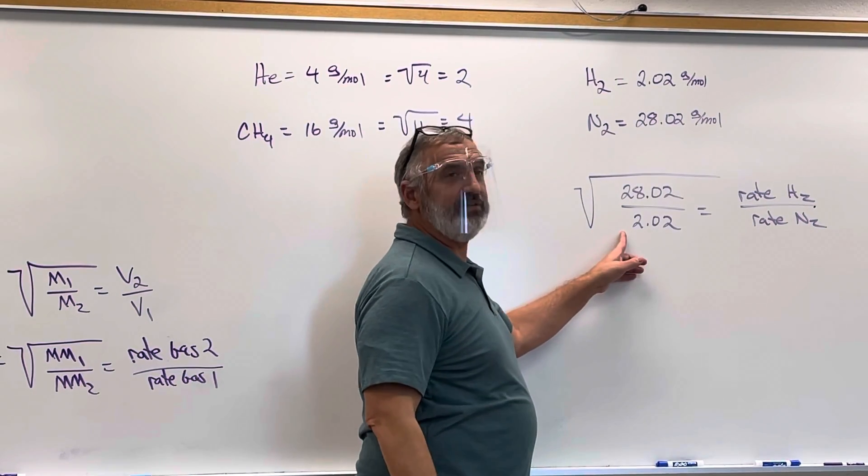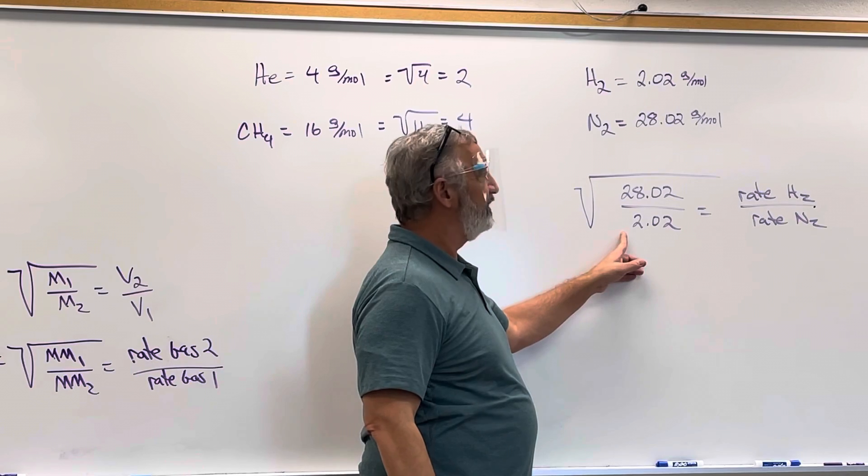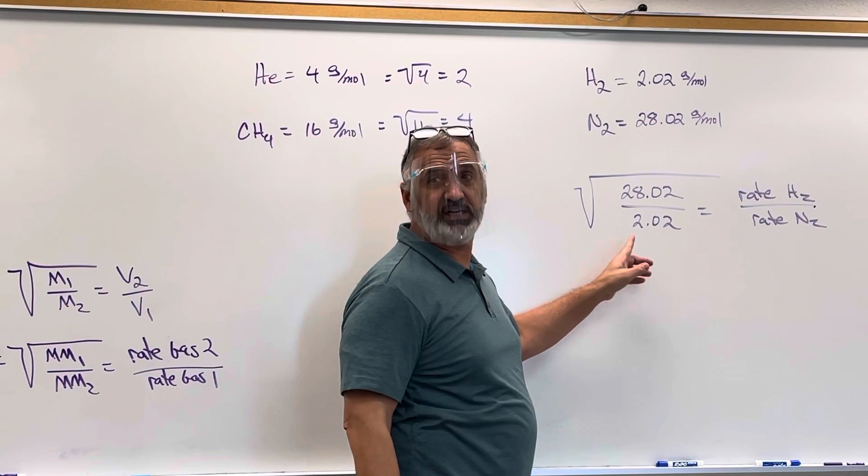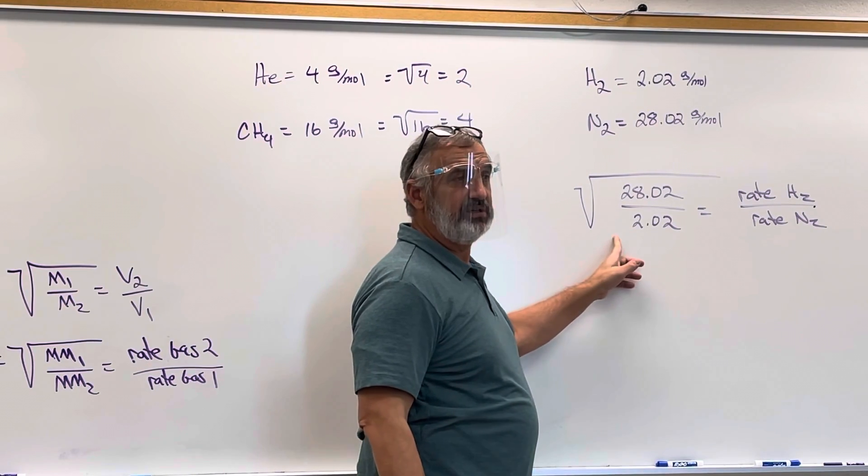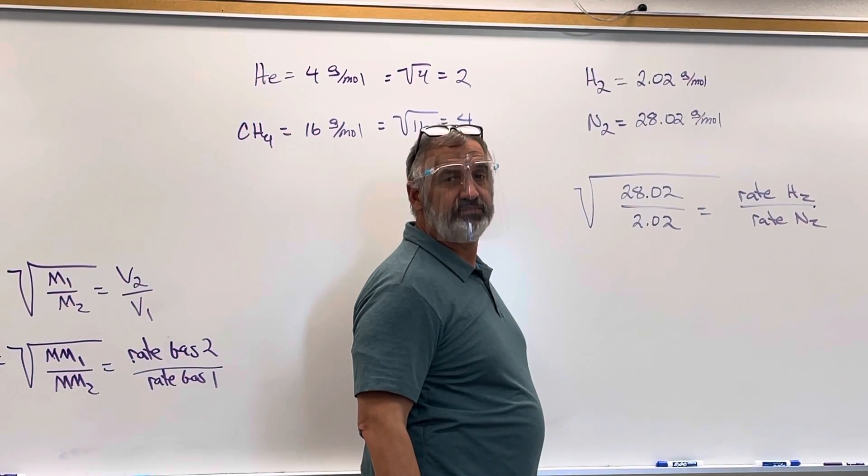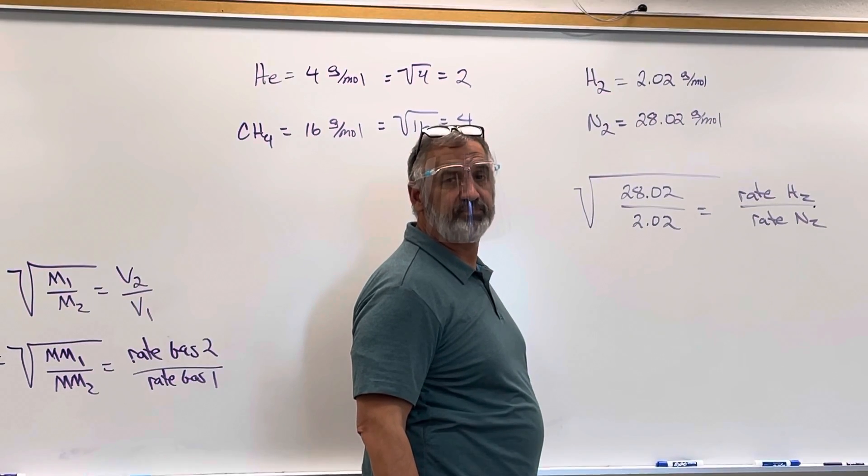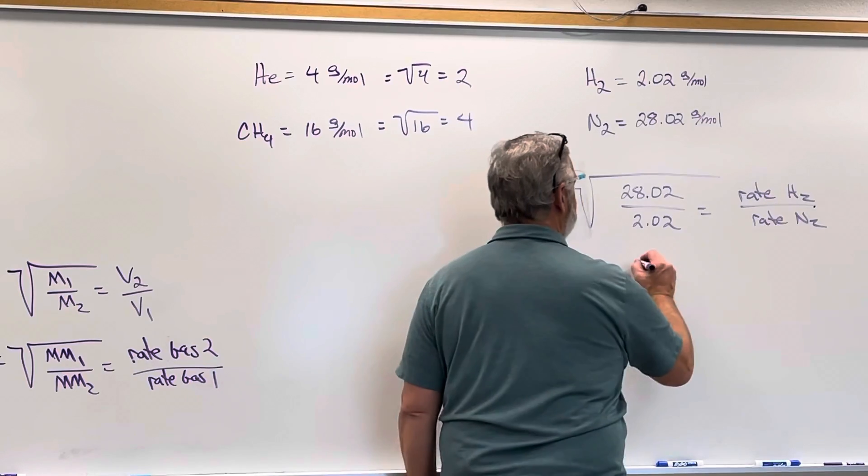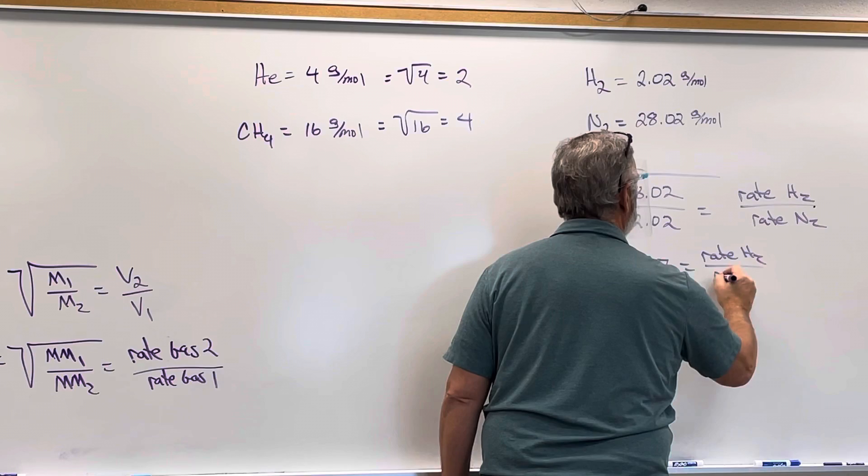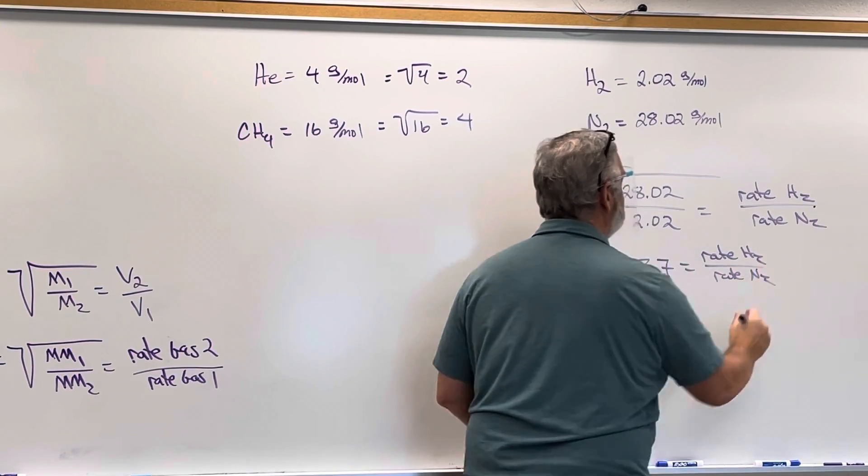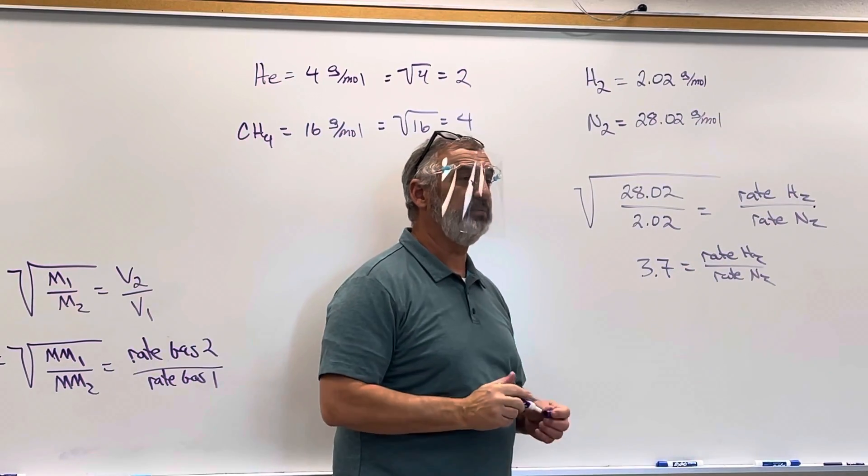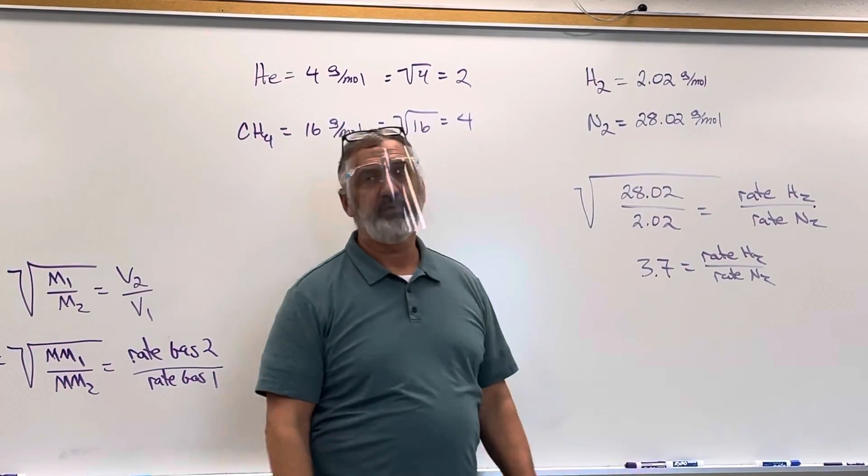So 28 divided by 2 obviously is 14. Square root of 14 is 3.7. So 3.7 is equal to the rate of hydrogen compared to the rate of nitrogen. In other words, hydrogen is going to diffuse and effuse 3.7 times faster than the nitrogen will. That's Graham's law.